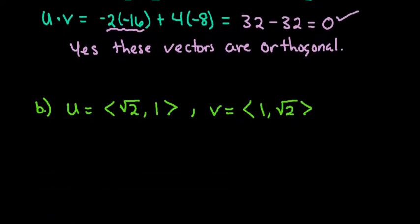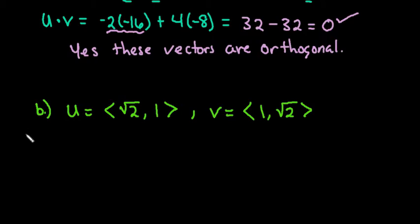Let's look at a second example. The second example that we have here is u is equal to the vector <√2, 1> and v is equal to the vector <1, √2>.